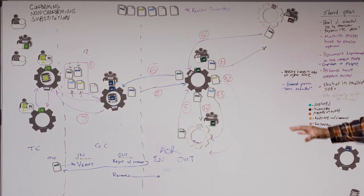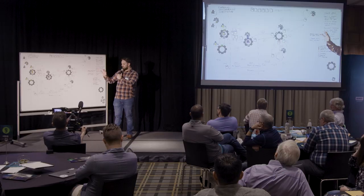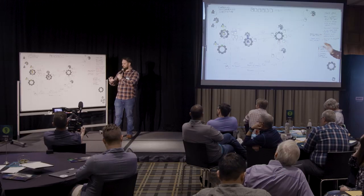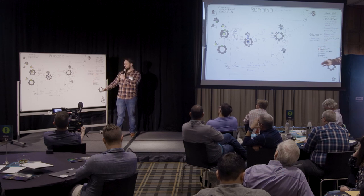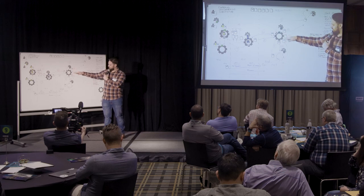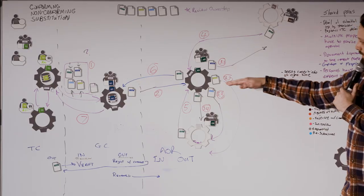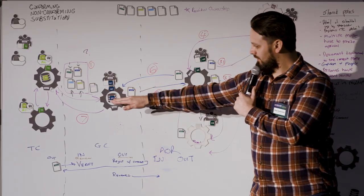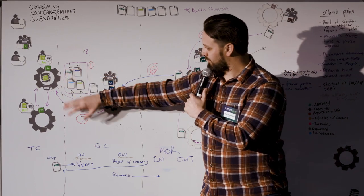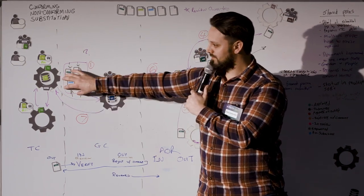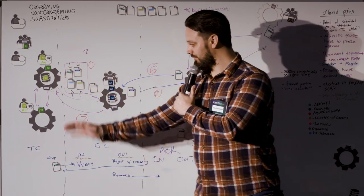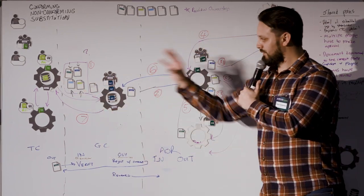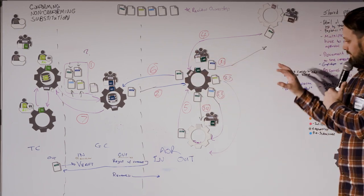A submittal package is not just one line item. A lighting package would have, let's say, ten light fixtures — eight could get approved, two could get declined or partially approved. But what matters is the light fixture that takes eight weeks to build, not the one you can get off the shelf tomorrow. Each lens is looking at things differently trying to get this through.